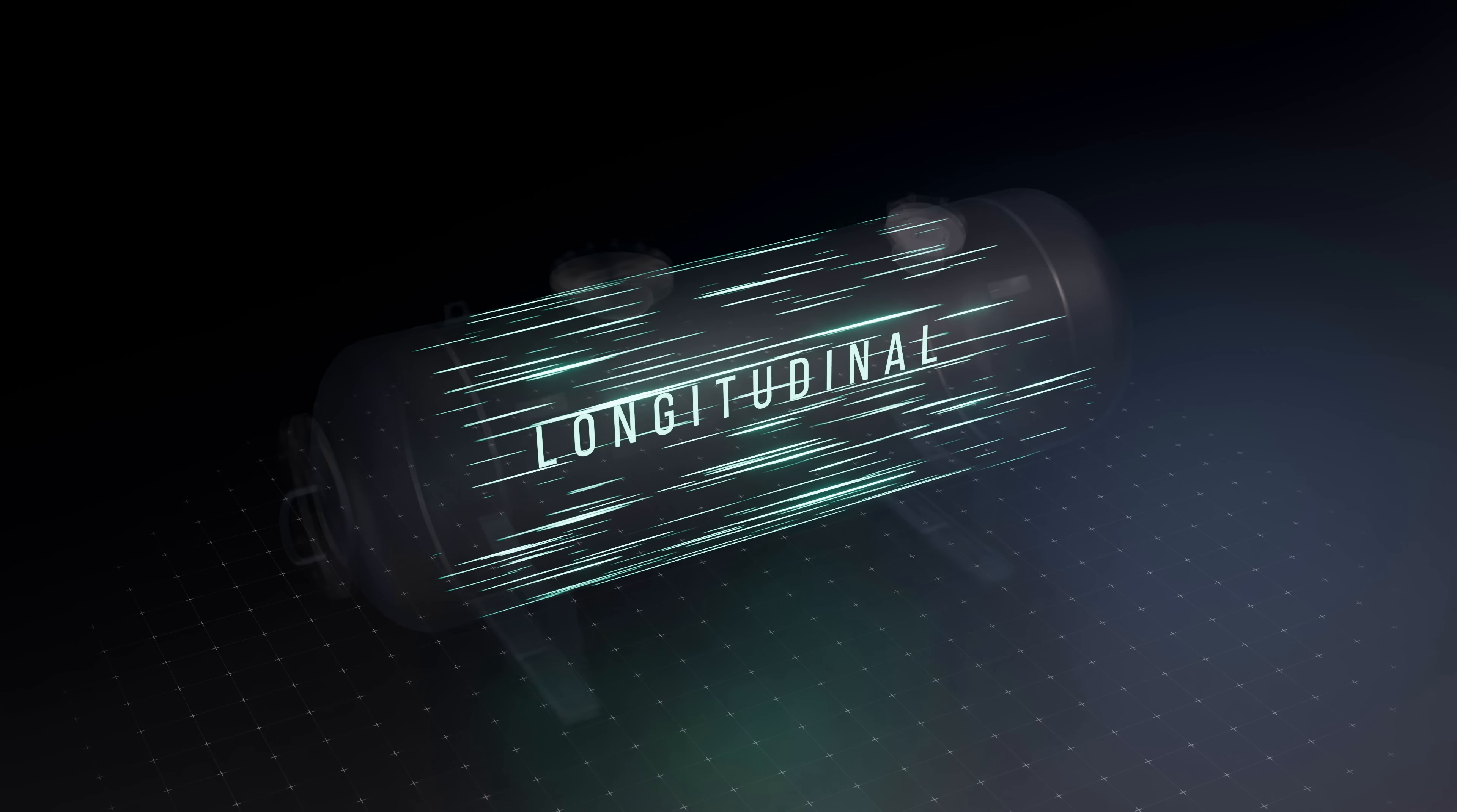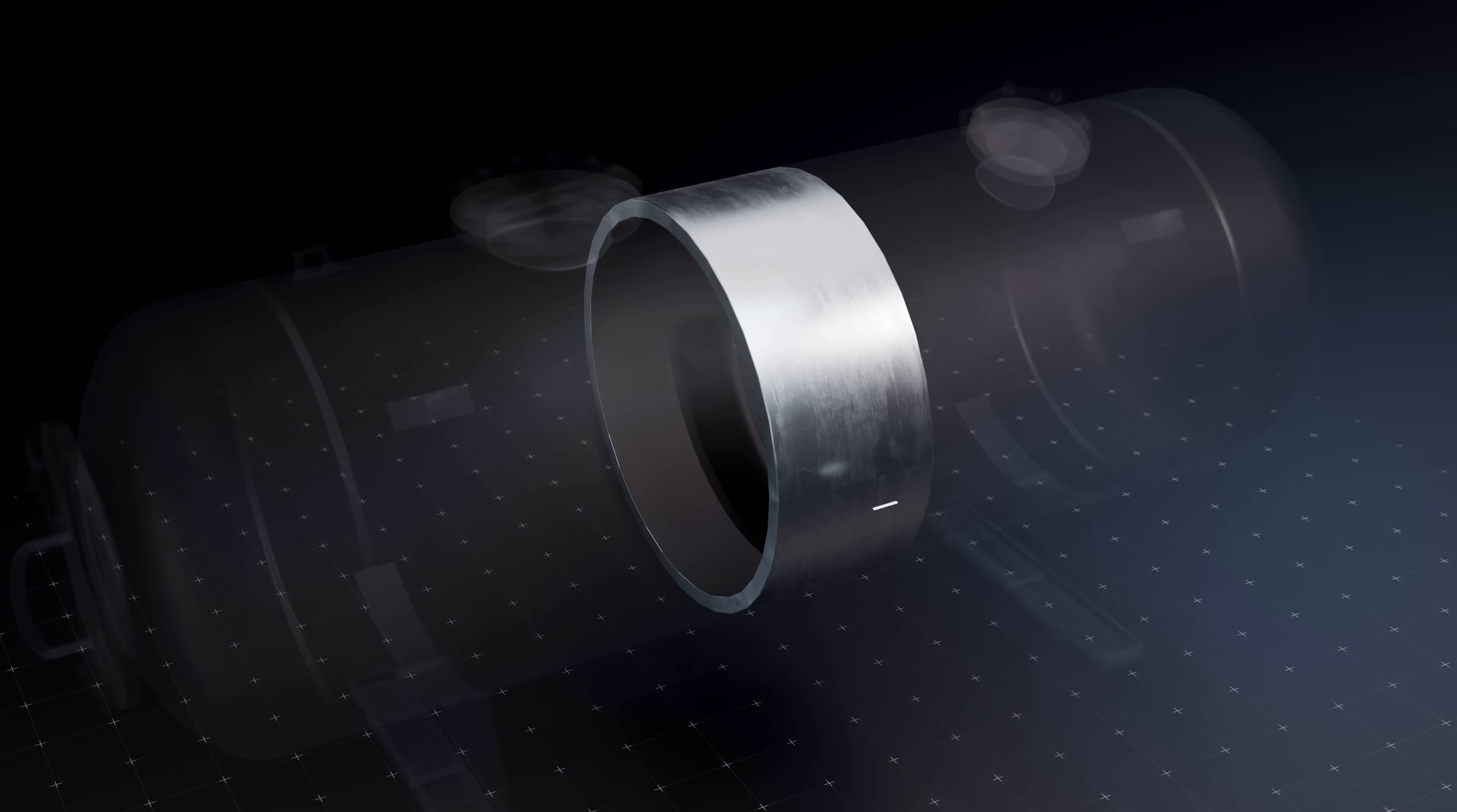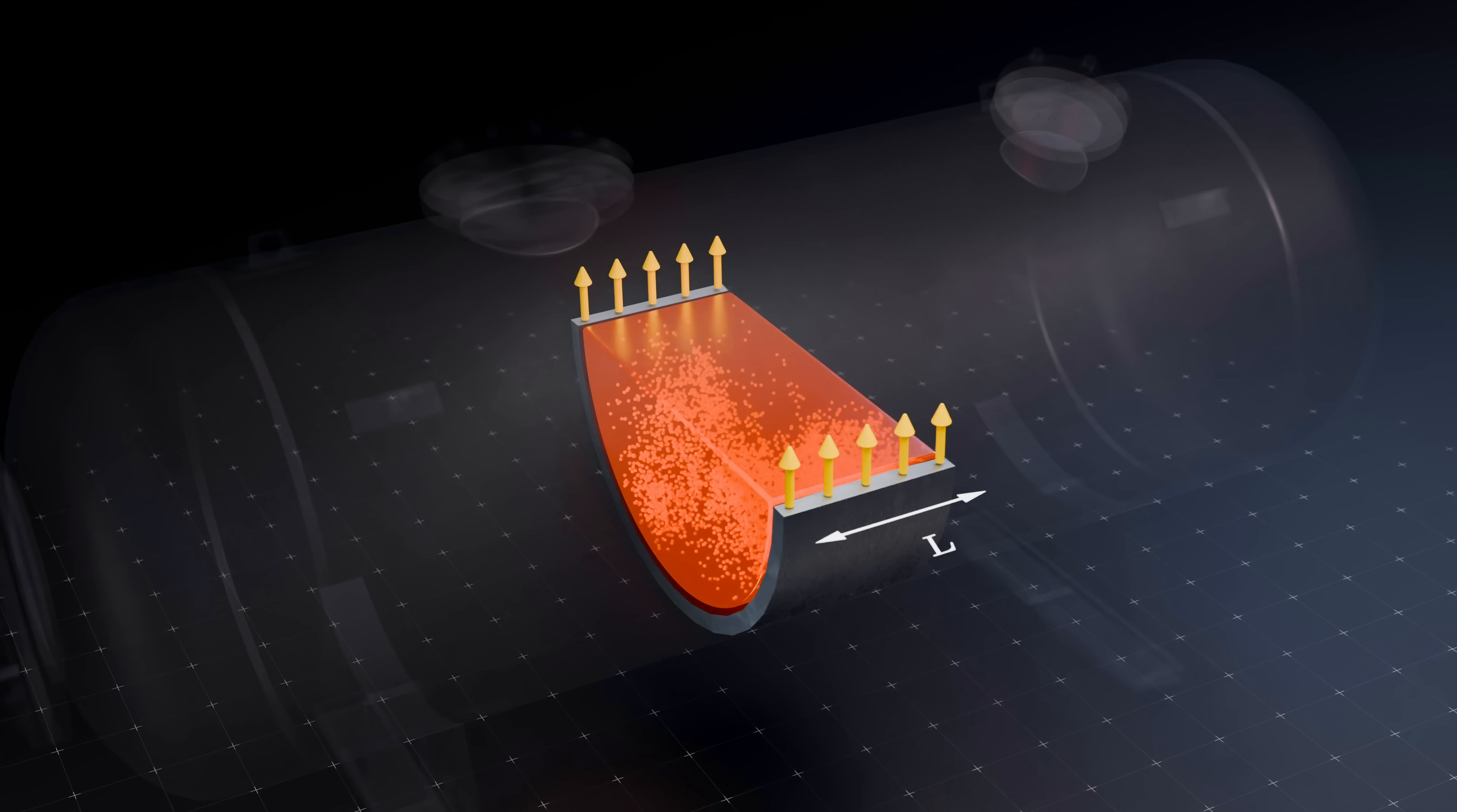Being able to quantify these stresses is the key to safely designing pressure vessels. Let's focus on deriving an expression for the hoop stress first. We can do this by considering an arbitrary section of the vessel, of length L, and cutting it in half to examine the hoop stress within it.